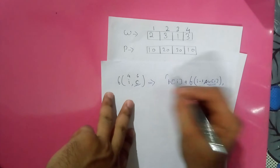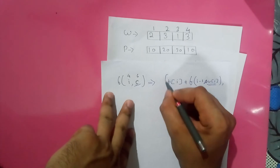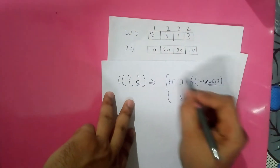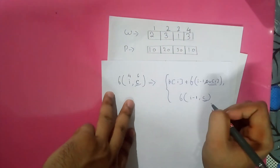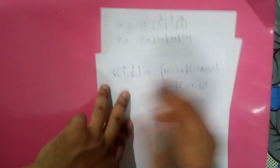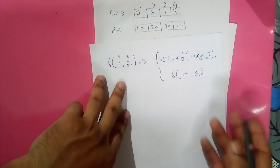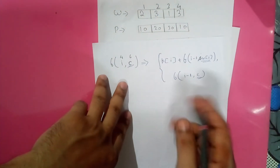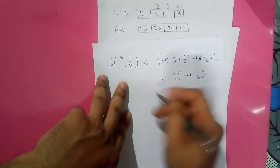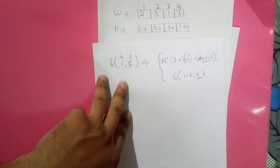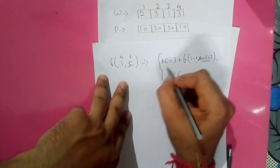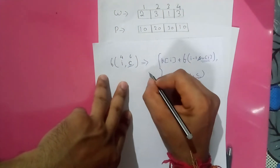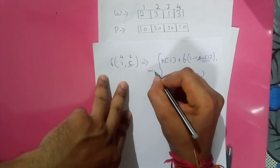So this is the first recursive call. I should return the maximum profit from these two options — include or exclude — so I return the maximum value that either of these two function calls returns.